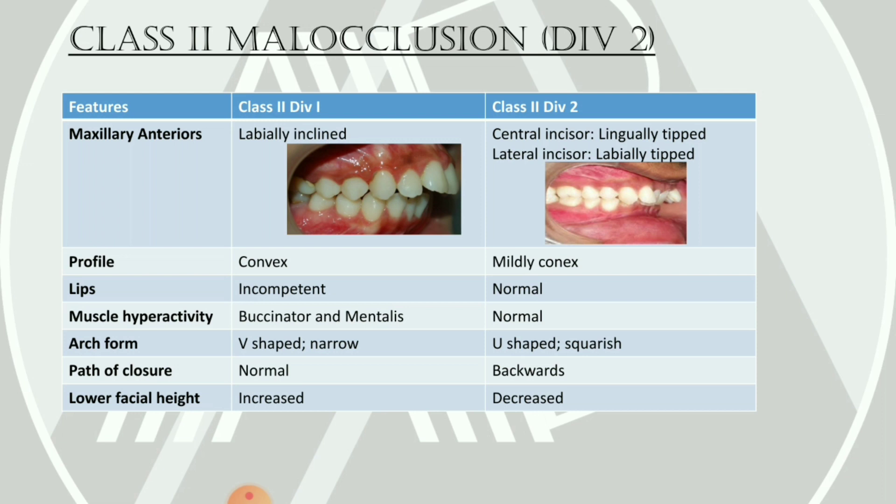Lower facial height is increased in Class 2 Division 1, whereas it is decreased in Class 2 Division 2. The decrease in lower facial height in Division 2 is because there is typically a presence of deep bite, and due to the deep bite the lower facial height is reduced.